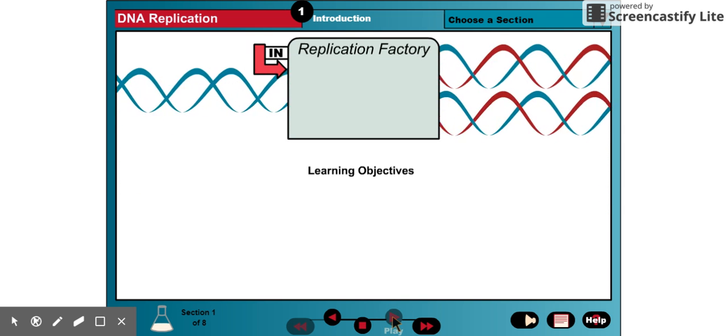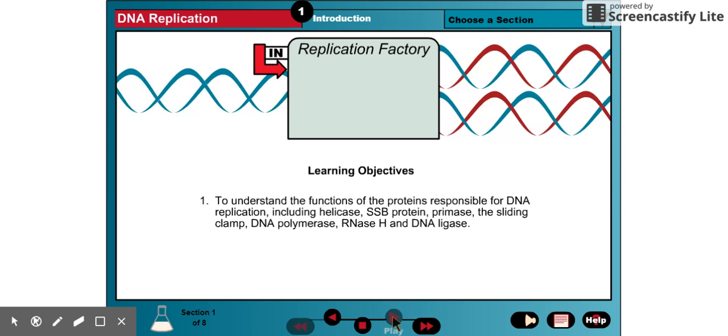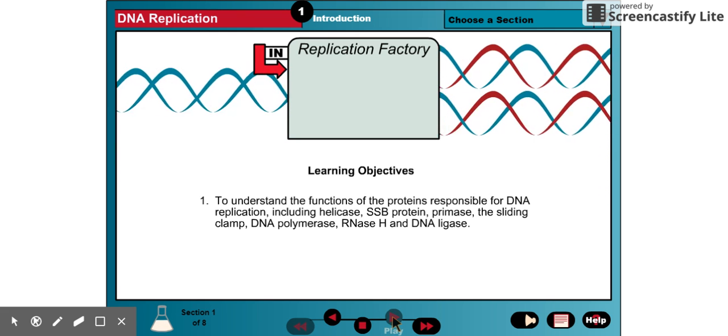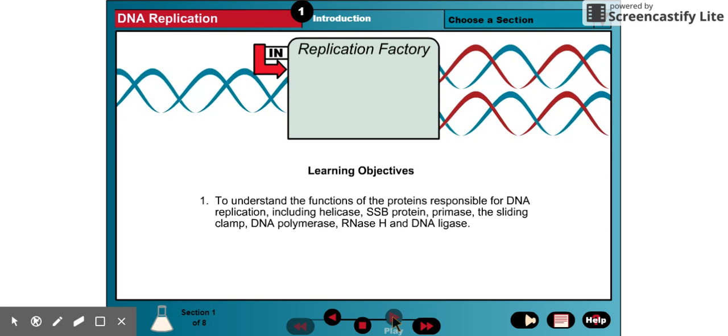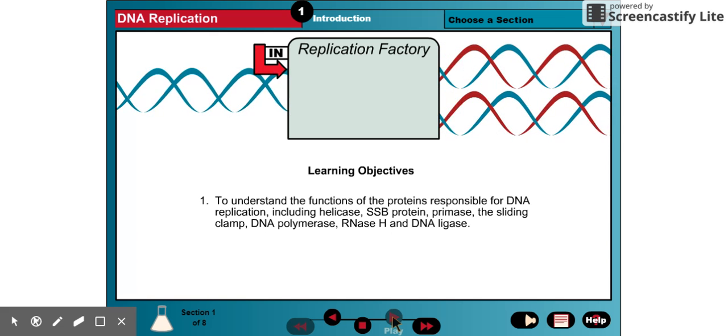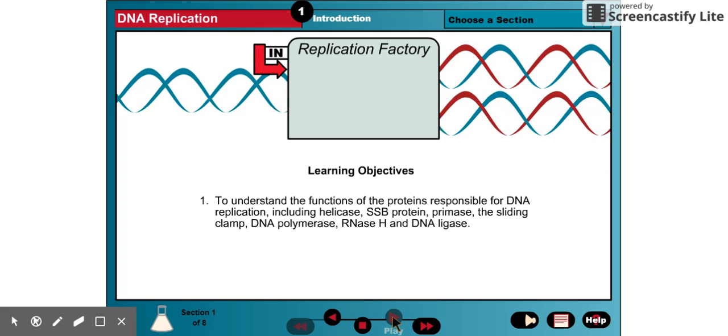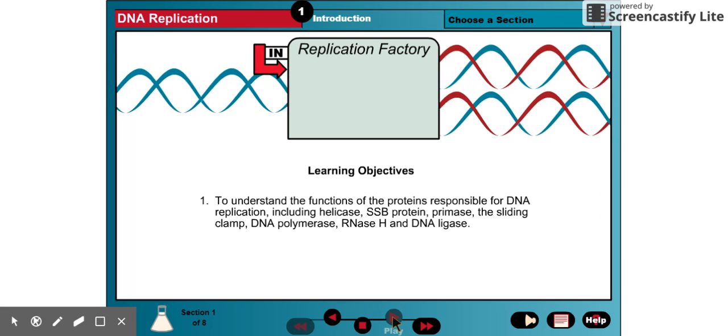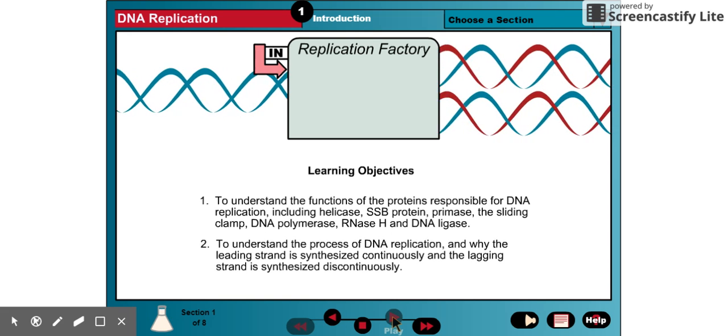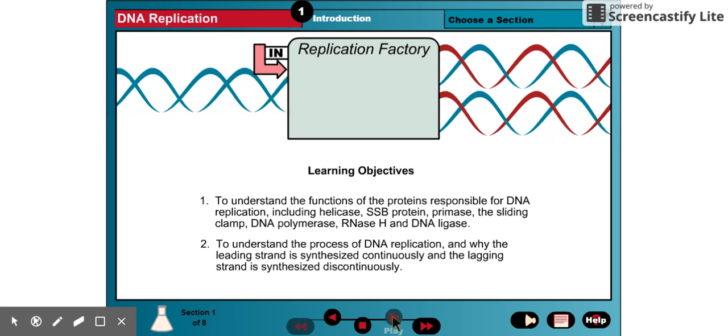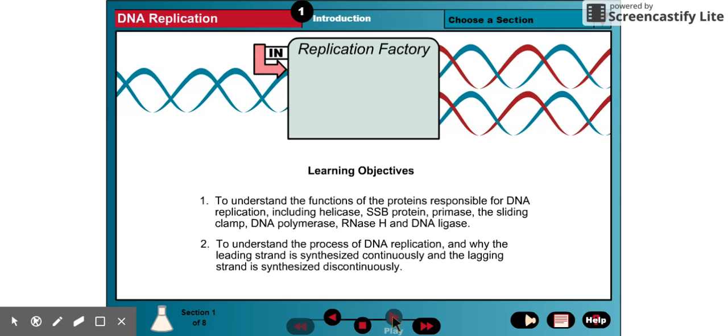The objectives of this exercise are to understand the functions of the proteins responsible for DNA replication, including helicase, SSB protein, primase, the sliding clamp, DNA polymerase, RNase H, and DNA ligase, and to understand why the leading strand is synthesized continuously and the lagging strand is synthesized discontinuously.